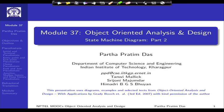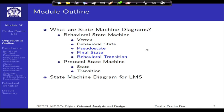Welcome to module 37 of object oriented analysis and design. From the last module, we have been discussing about state machine diagrams. These are behavioral diagrams used to capture the discrete behavior of a complex system at an appropriate level. We have already covered the vertex and behavioral state of a state machine diagram, which could be of behavioral state nature or protocol state machine nature.